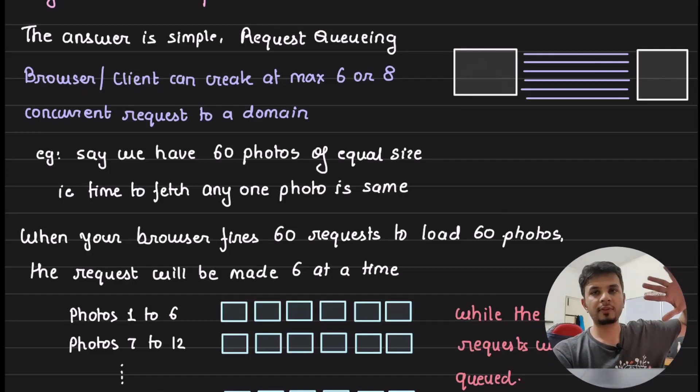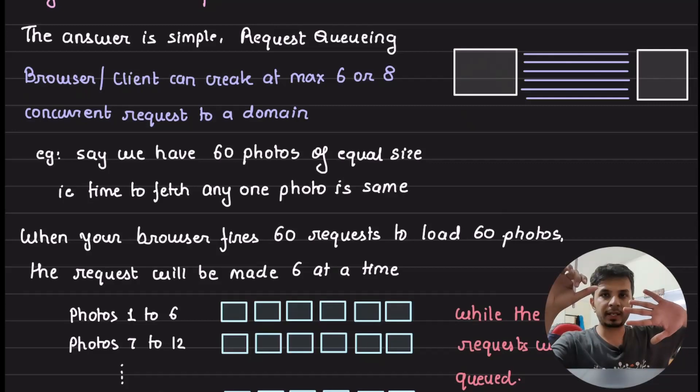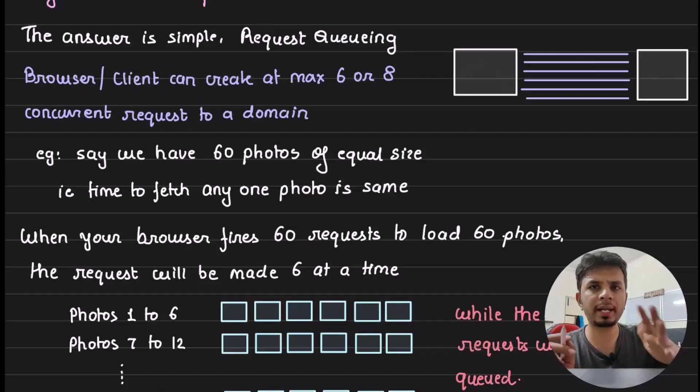What would happen is, if you are making a lot of requests, all the requests would be initiated, they would be queued, 6 would be picked, and then when any one of them completes, the next one would be picked from the queue. Then when someone else gets complete, the next one gets picked up. But at max, that would be 6. Now, this number varies from 6 to 8 depending on Chrome, Firefox, Safari, everyone has different number, but there is some limit to that.